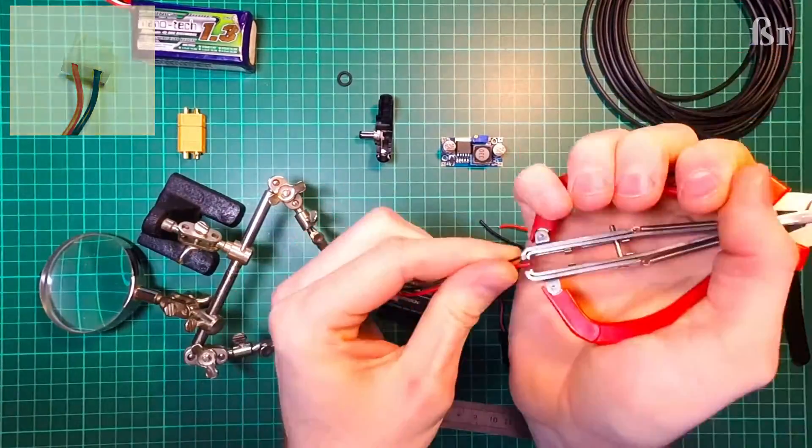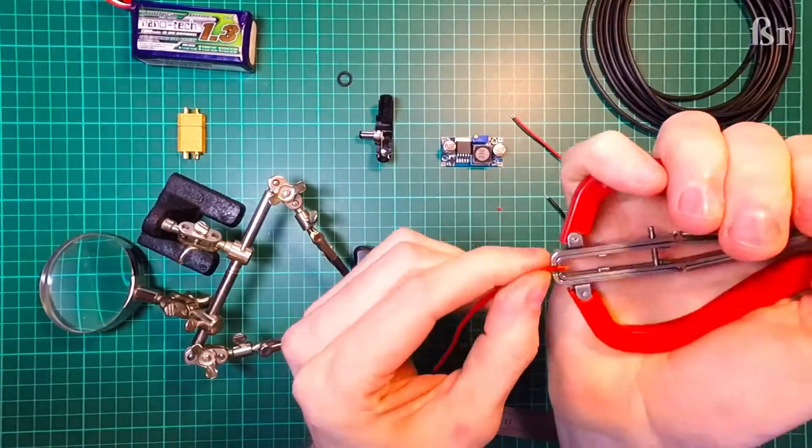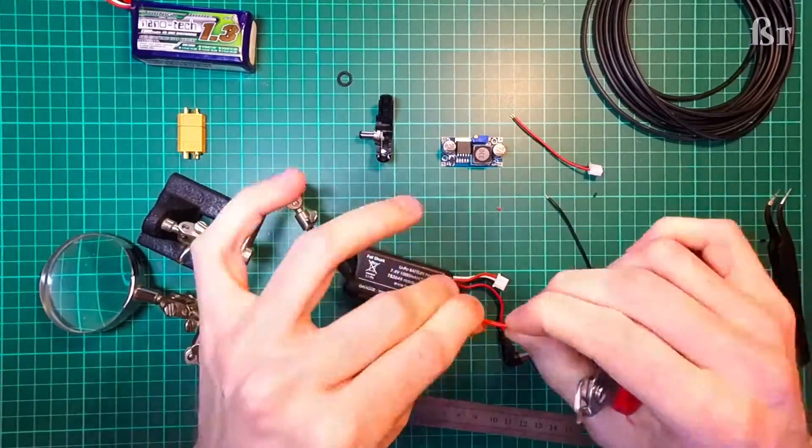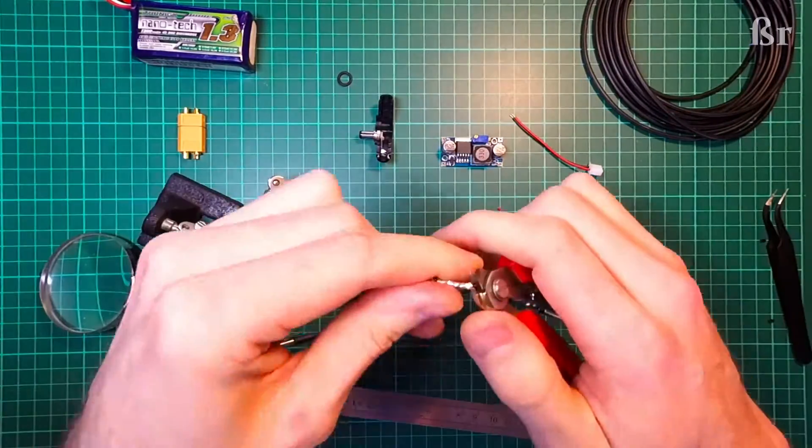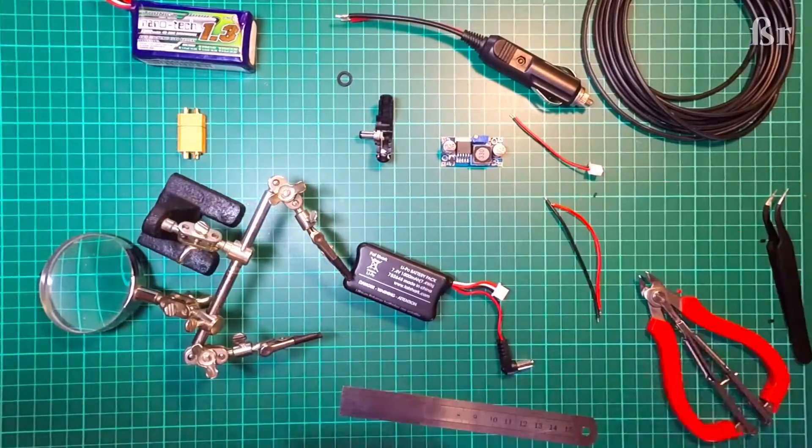After that you're going to need some extra wire. You're looking for two pieces of red wire at about 10 to 12 centimeters and two pieces of ground or black wire at the same length, so 10 to 12 centimeters.